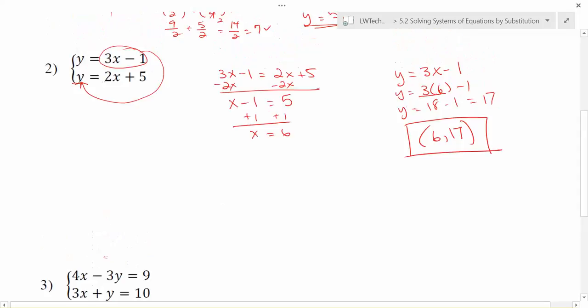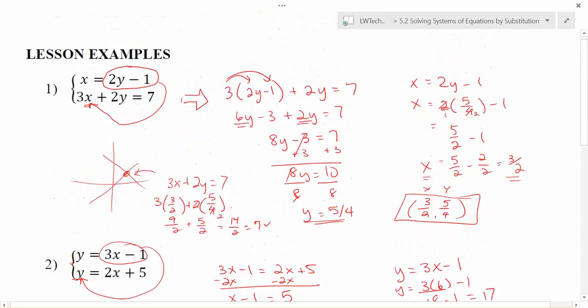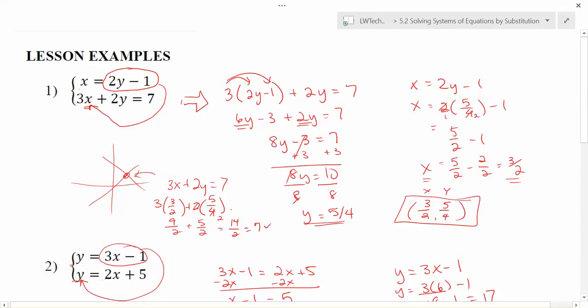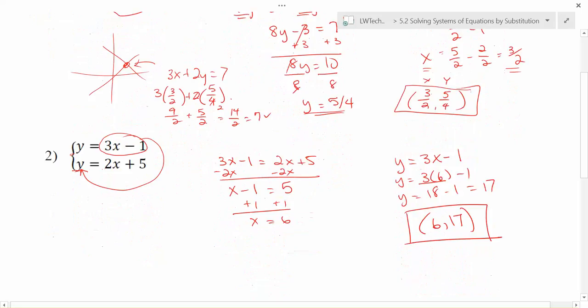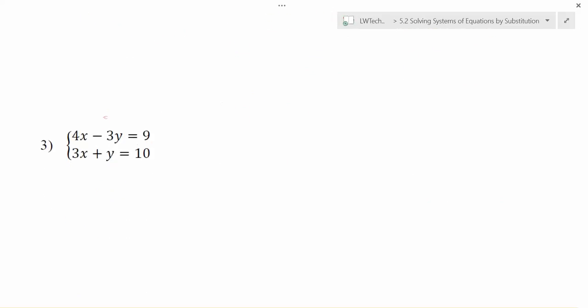In both of these last equations, notice that one of the variables was by itself. In this problem, we had a y by itself that we were able to substitute in the other equation. In problem number one, we had an x by itself, which we were able to substitute in another equation. Sometimes your equations will be in different forms, and there won't actually be a letter by itself. However, we can still use the substitution process.